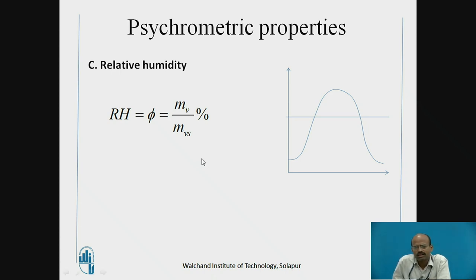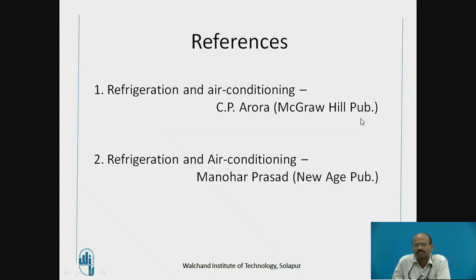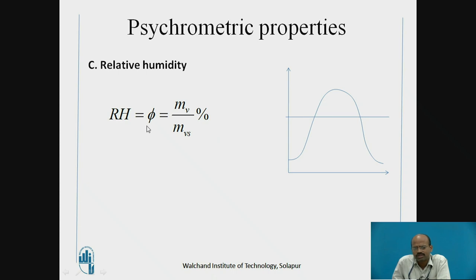The next property is relative humidity. This humidity is measured with some reference. Relative humidity, denoted by phi, is the ratio of mass of water vapor to the mass of water vapor in saturated condition, expressed as a percentage. All these properties will be shown on the psychrometric chart.